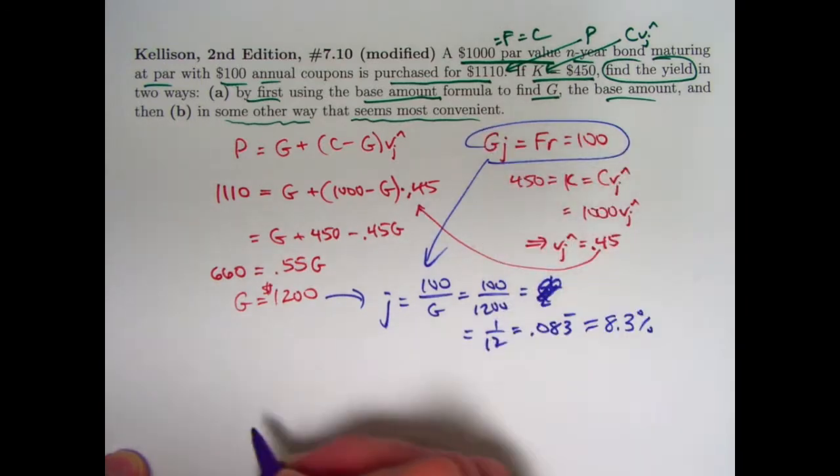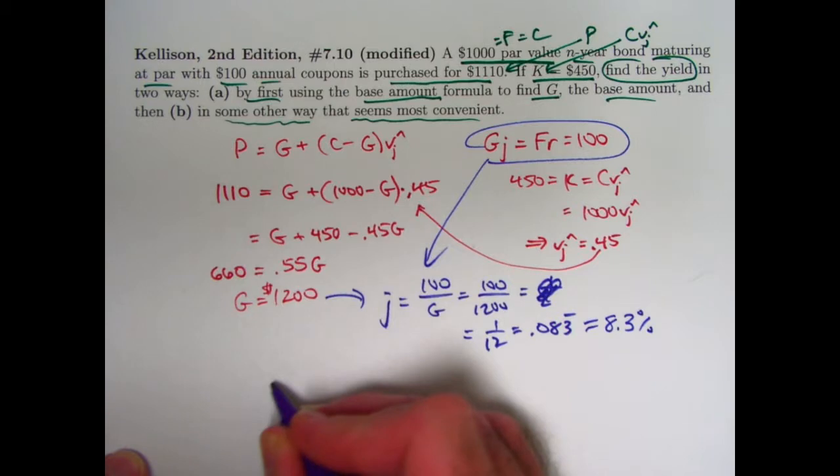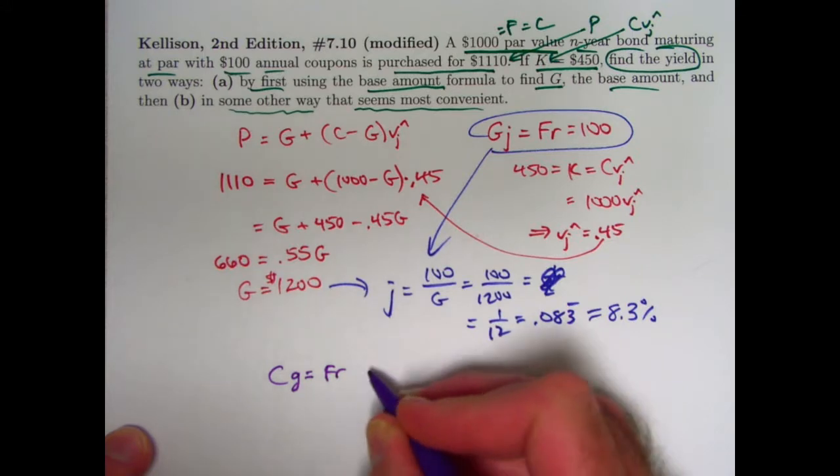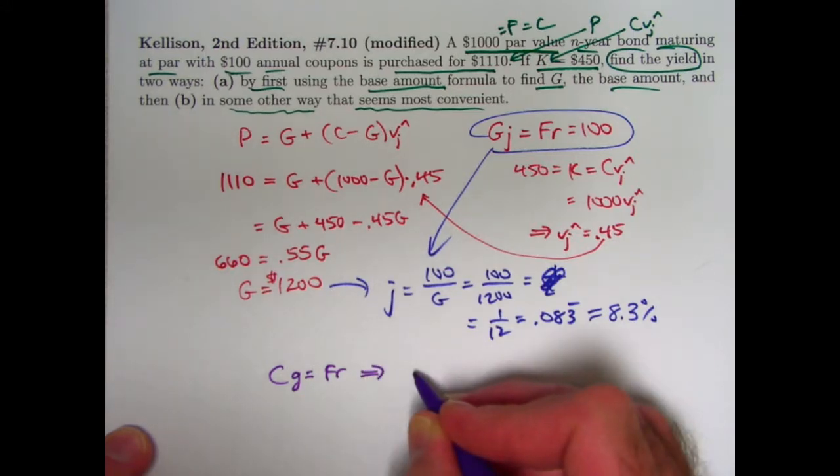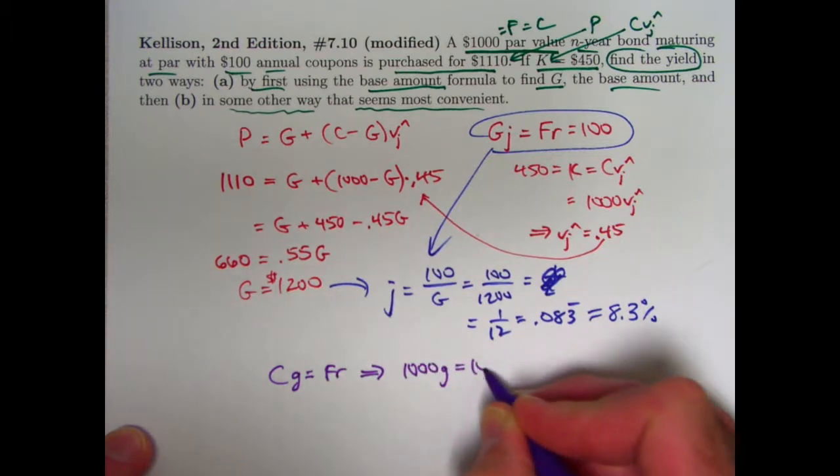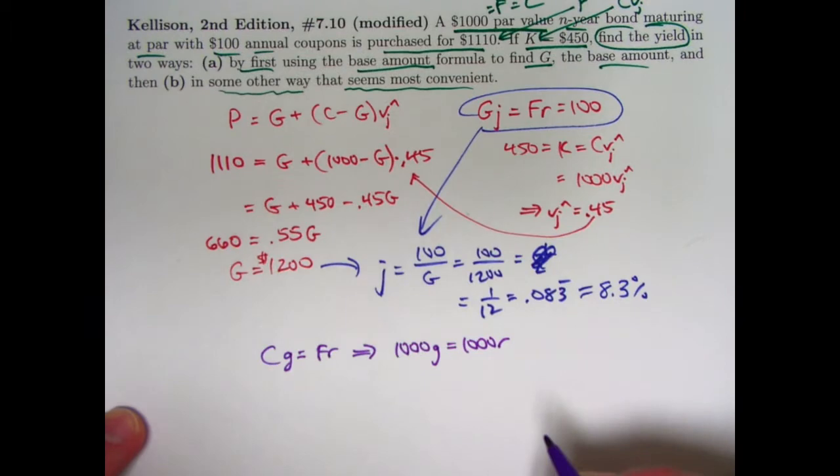Because in general, C times little g is F times R. And so since C and F are the same, that implies 1,000 little g equals 1,000 little r. G is called the modified coupon rate.